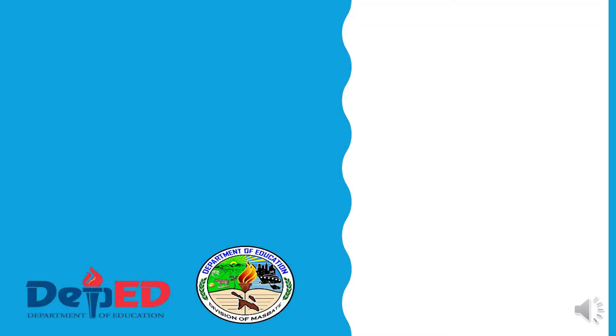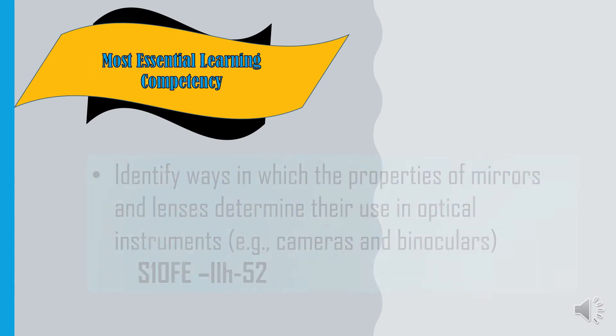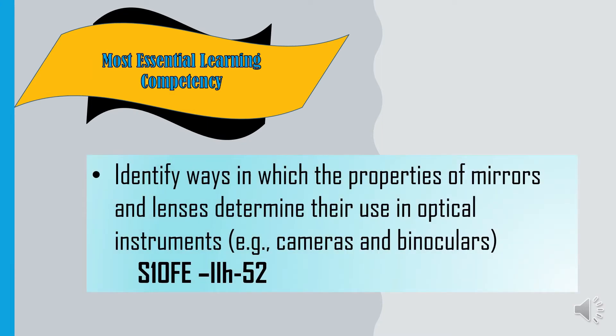This video lesson focuses on the uses of mirrors and lenses. The most essential learning competency is identify ways in which the properties of mirrors and lenses determine their uses in optical instruments such as cameras and binoculars.